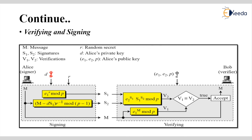Signing takes place using the private key: Alice uses her private key to compute s1, and then uses s1 to compute s2. At the receiver's end, Bob uses the sender's public key pair e1, e2, and p to compute v1 and v2. When v1 equals v2, the receiver confirms the signature is valid and accepts the message.